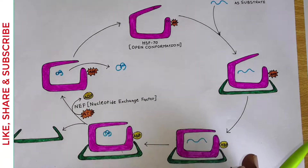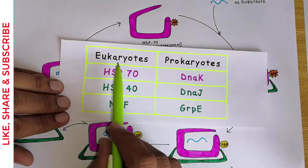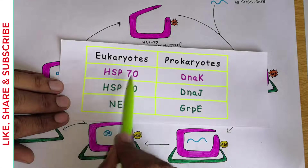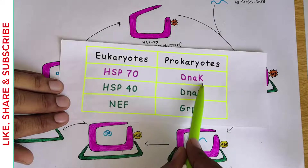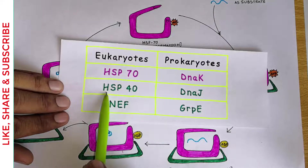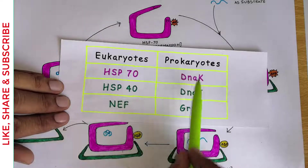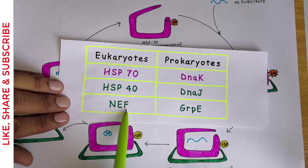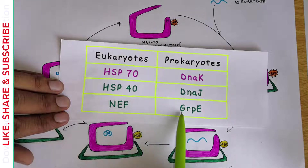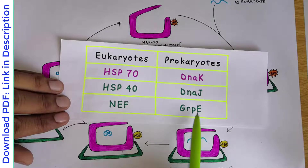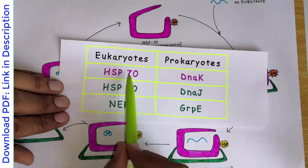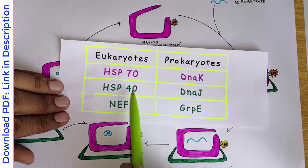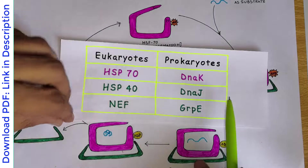There are certain minor differences. In eukaryotes, we have the HSP70 system. Similarly, in prokaryotes, we have the DNAK protein. In eukaryotes, HSP40 is present; in prokaryotes, we have DNAJ. In eukaryotes, we have the nucleotide exchange factor, and the same function is carried out in prokaryotes by the GRPE protein. These eukaryotic proteins and their prokaryotic counterparts are structurally and functionally almost similar.